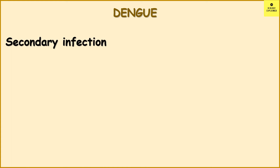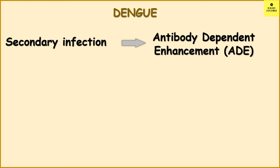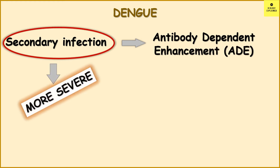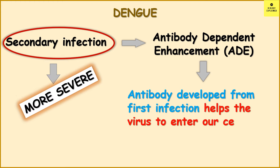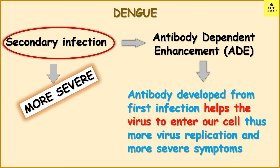Rather, the secondary infection becomes more severe due to antibody-dependent enhancement. So the secondary infections of dengue are more severe. Basically, what happens is the antibody developed from the primary infection, instead of stopping the virus from entering our cells, actually helps more virus be produced, which results in severe dengue.